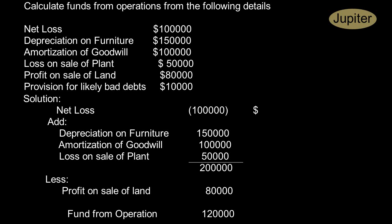Provision for bad debts is the contra asset, it is deducted from debtors balance. That's why, as it alters the working capital, we consider it while computing fund from operation. This is how we arrive at funds from operations.